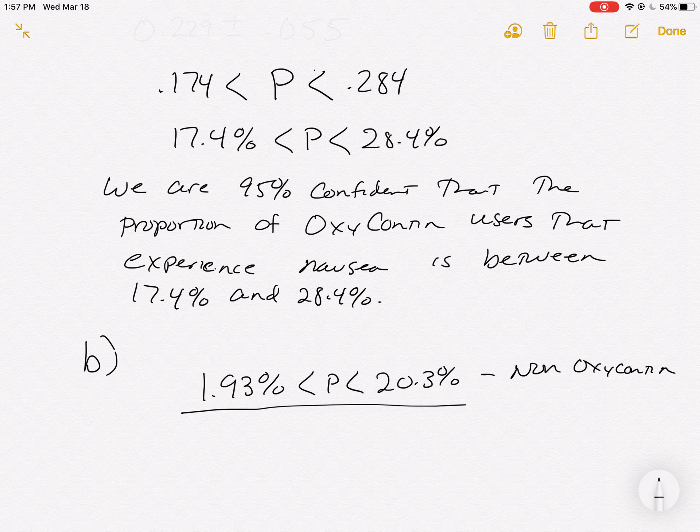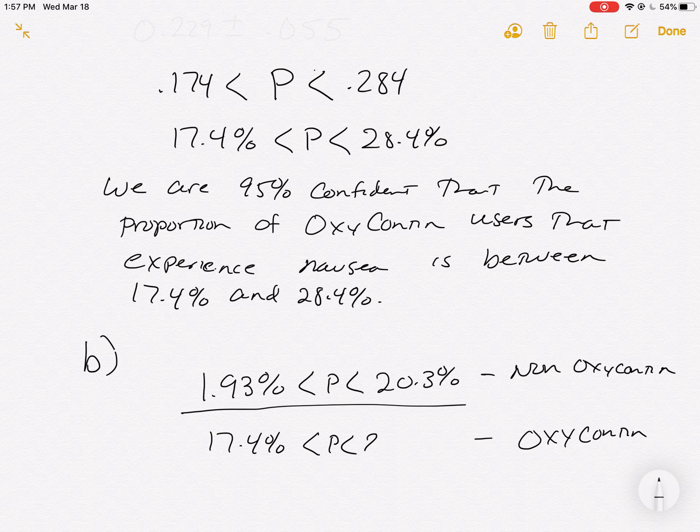The OxyContin people, what we found in Part A, has the 17.4% to 28.4%. And notice that there's overlap between those.